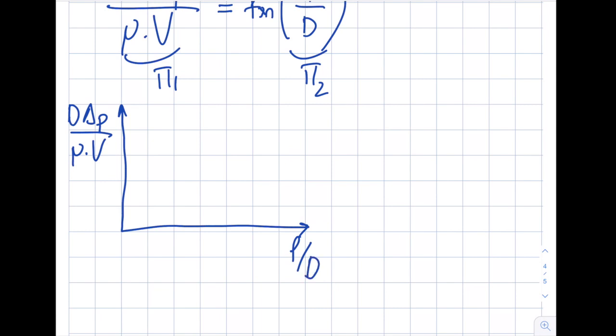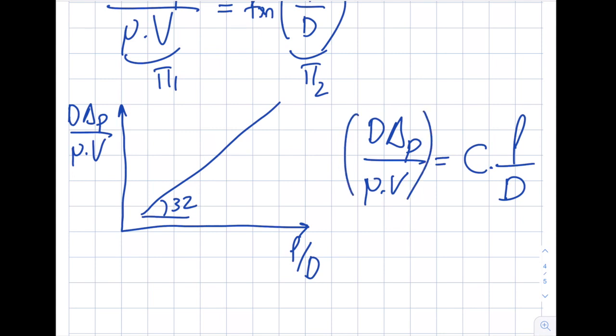So if I go ahead and do this experiment for a circular pipe, just a regular constant diameter pipe, what I will obtain is I will actually obtain a straight line. I will actually obtain a straight line, and the slope of that will be 32. It's going to be d delta p over viscosity times velocity will be c, some kind of a constant times l over d. And if I do this, what you will obtain is you get this to be 32 for a pipe, obviously a circular pipe.